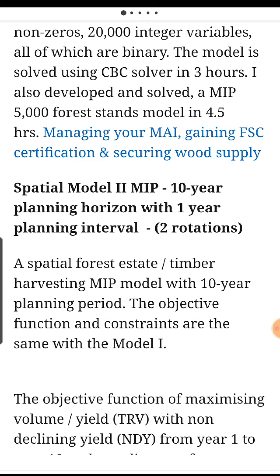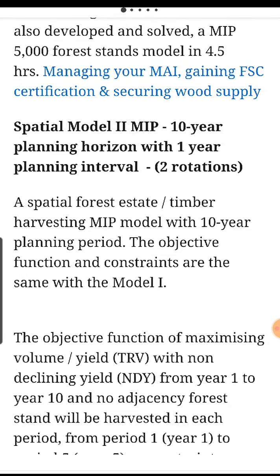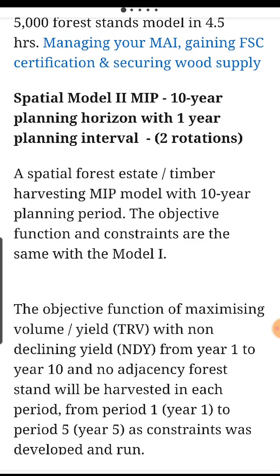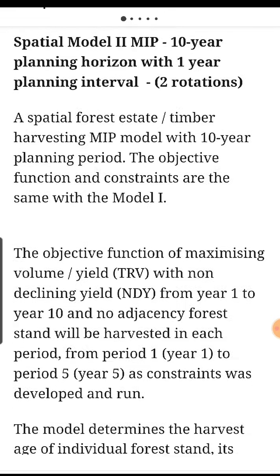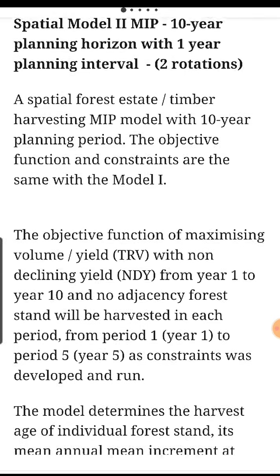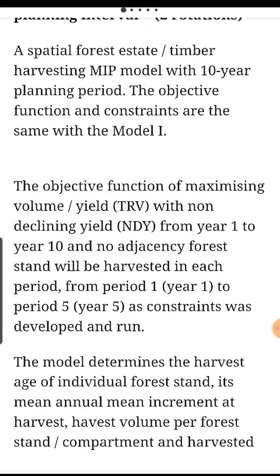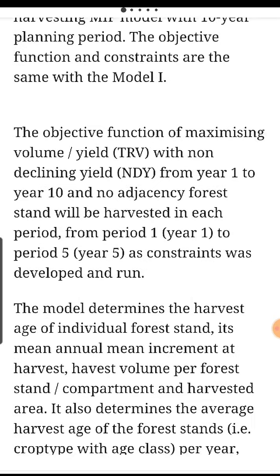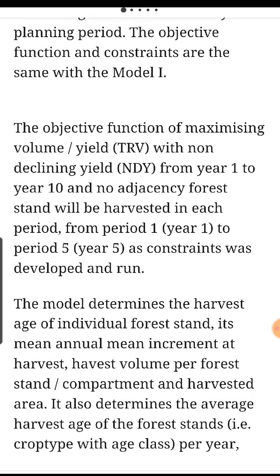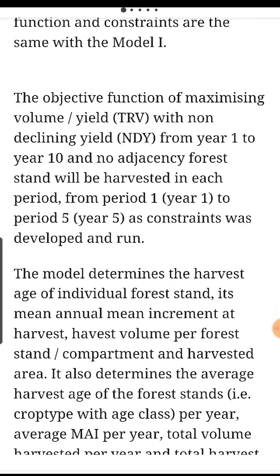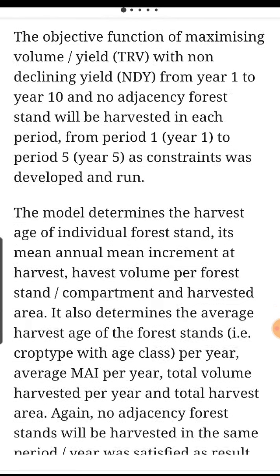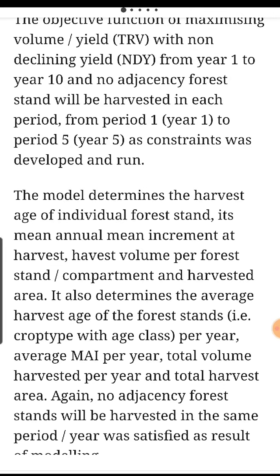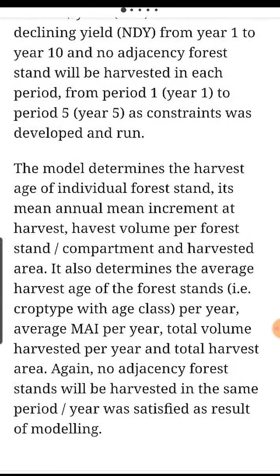Managing your MAI, getting spatial optimization, securing wood supply. Spatial Model 2 MIP — 10-year planning horizon with 1-year planning interval, 2 rotations. A spatial forest estate timber harvesting MIP model with 10-year planning period. The objective function and constraints are the same as Model 1: maximizing volume yield (TRV) with non-declining yield (NDY) from year 1 to year 10, and no adjacency forest stands will be harvested in each period.